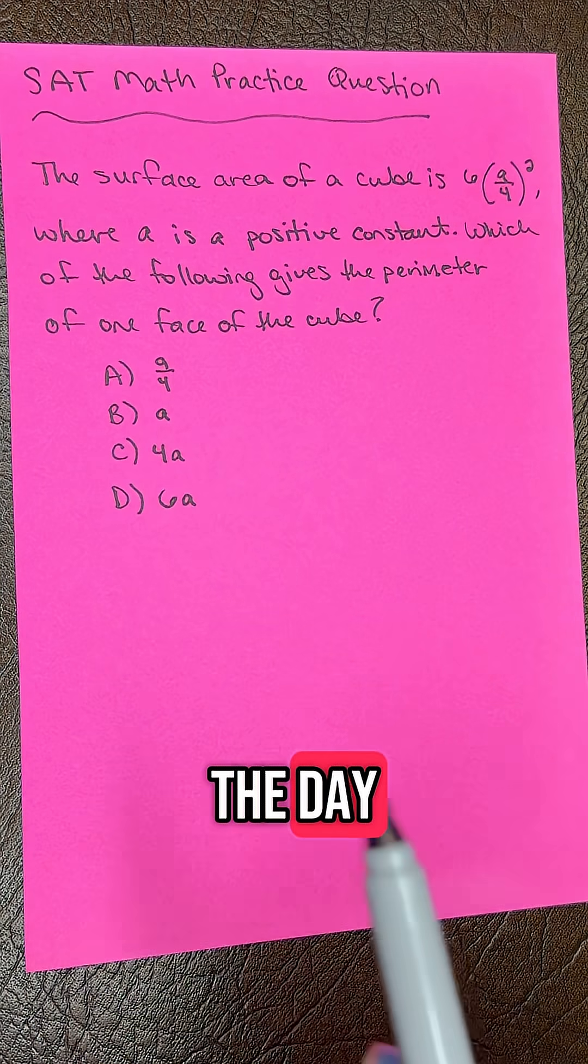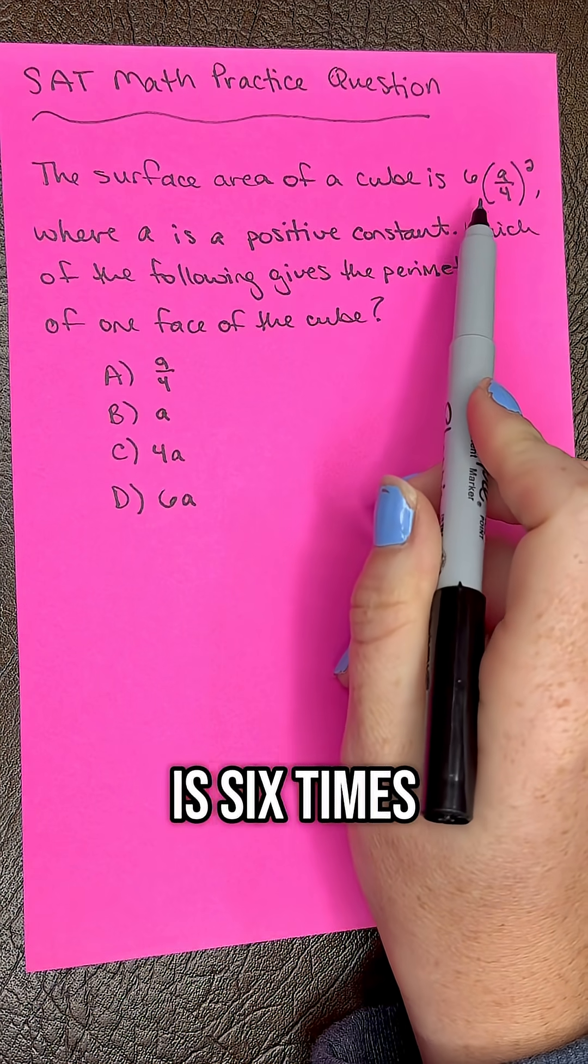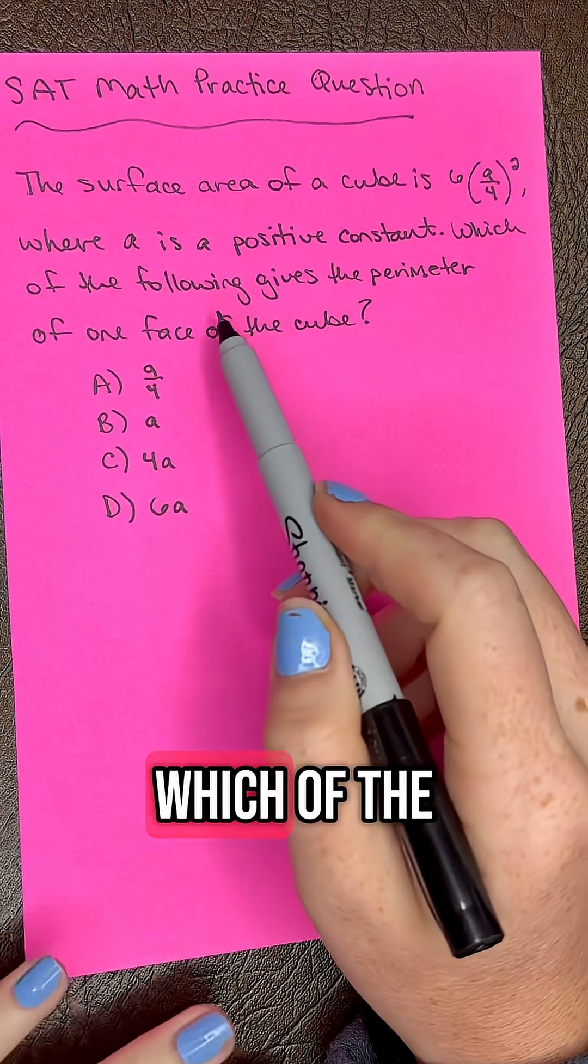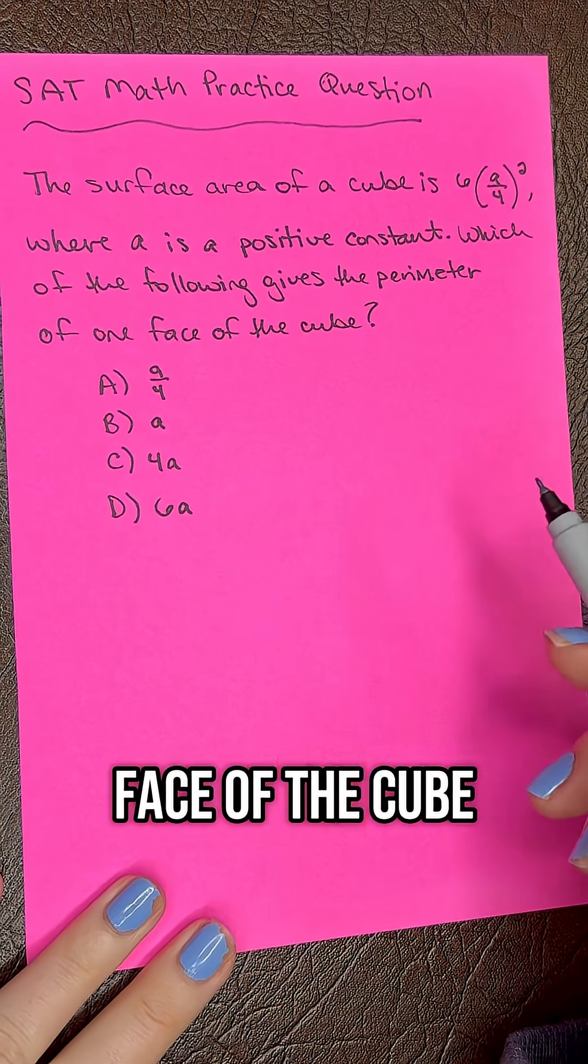SAT math question of the day. The surface area of a cube is 6 times (A/4) squared, where A is a positive constant. Which of the following gives the perimeter of one face of the cube?